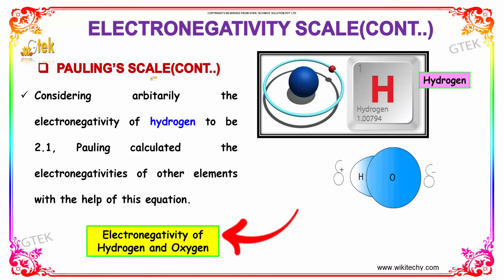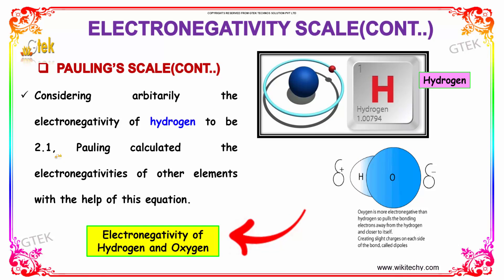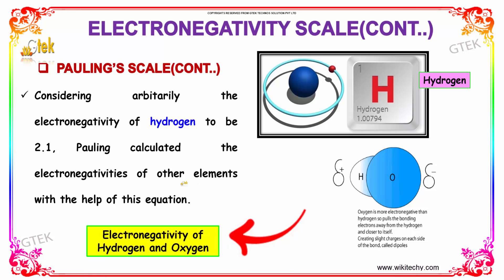For the Pauling scale, considering arbitrarily the electronegativity of hydrogen to be 2.1, Pauling calculated the electronegativities of other elements with the help of this equation.